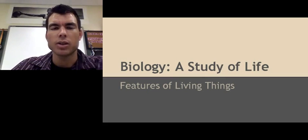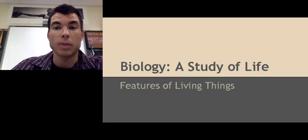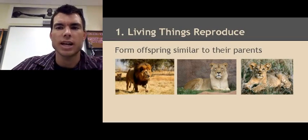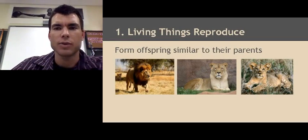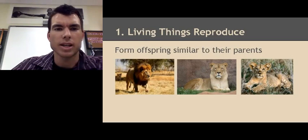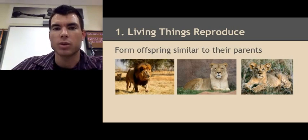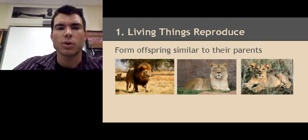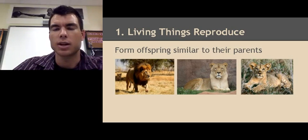Now that we know all living things are made of cells, we need to figure out what exactly cells need. There are eight things that cells need or do. The first thing is that they reproduce. You can see here a male lion and a female lion — when they reproduce, they form offspring similar to the parents. The offspring can have an identical look to the parents or traits of both parents, like the lion cub shown here.